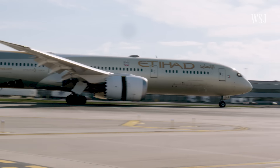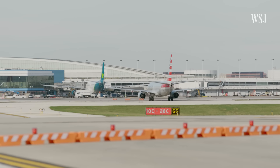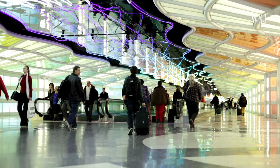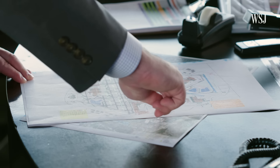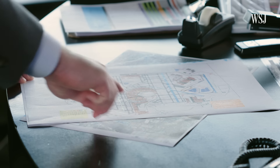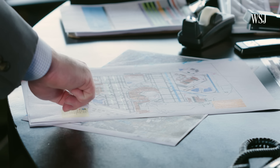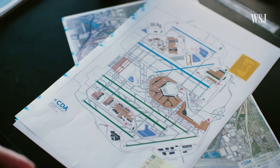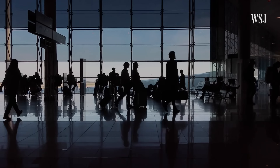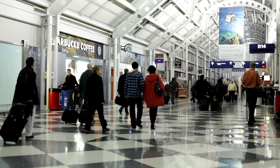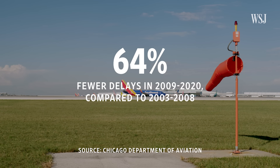O'Hare says it will eventually be able to land four aircraft simultaneously, which would make it the first commercial airport in the country to allow for this. Prior to the modernization plan, in good weather, O'Hare could achieve an hourly arrival rate in the low 90s with three runways. Adding a fourth parallel approach would increase the arrival rate into the upper 130s to low 140s. Since O'Hare opened its first new runway, it has cut the more controllable system delays by more than 60% compared with the five years prior.